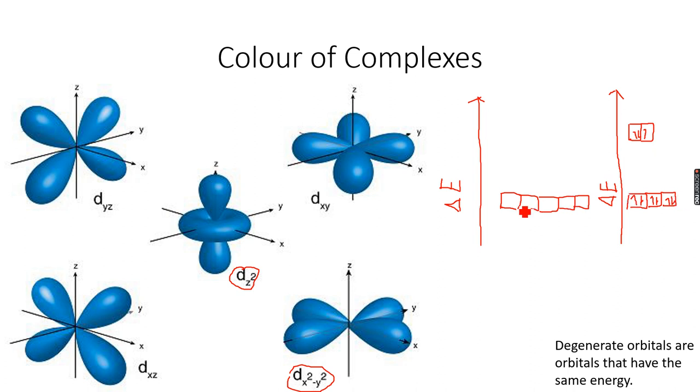What happens is that these electrons absorb energy, and this energy is absorbed in the visible light region. So they absorb photons of visible light, and as they absorb photons of visible light that correspond to this energy gap, they jump. This electron will jump to this orbital because a photon will be absorbed.